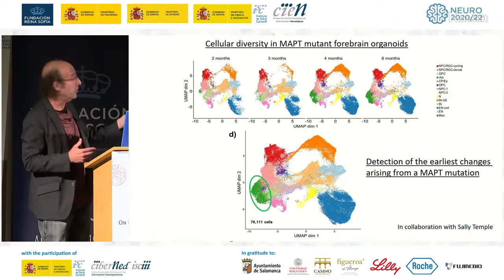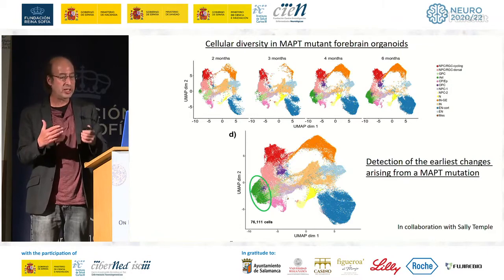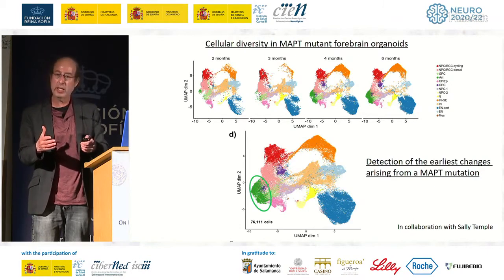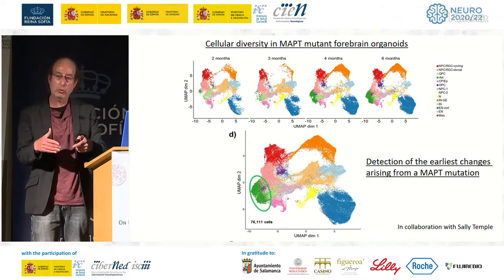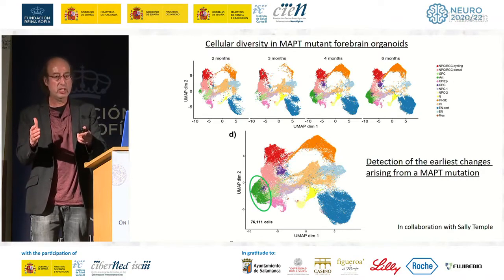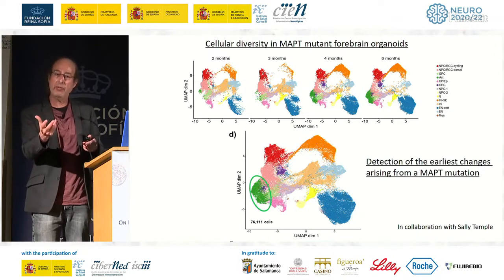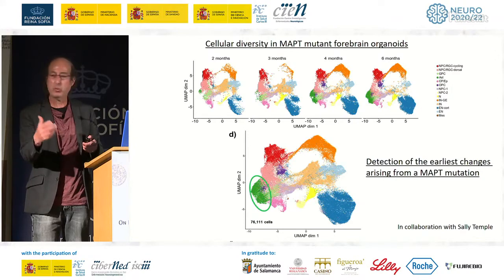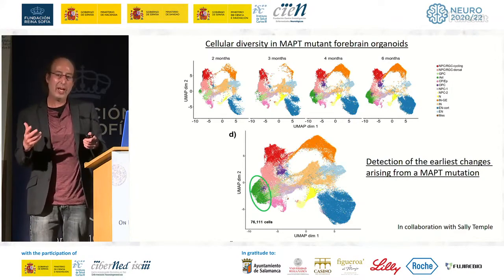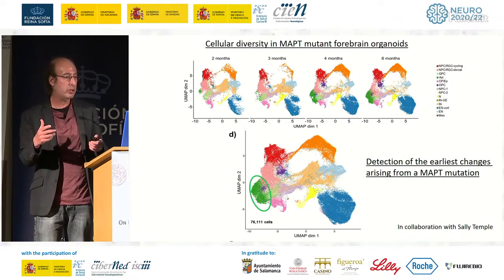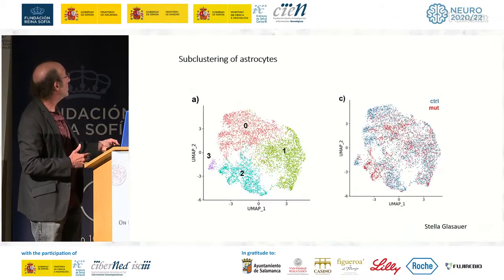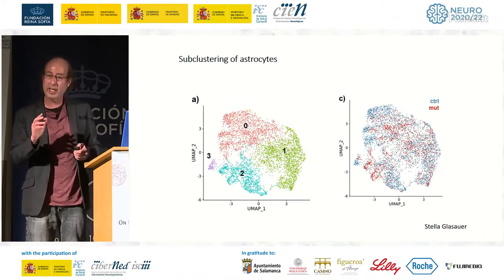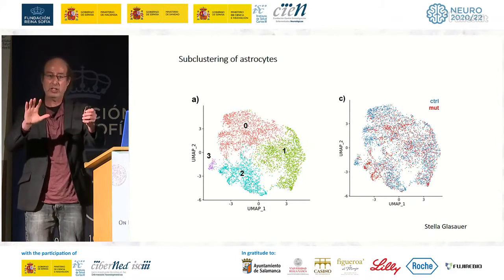We then look for changes in expression in the presence of these mutations. An important caveat: organoids always remain relatively immature — they certainly never develop tangles. So we're talking about the presence of a mutation in a neuron before the disease is actually expressed as we know it. But there's no way a cell likes having a mutation in it, so I'm going to show you some early changes that start to flare up.